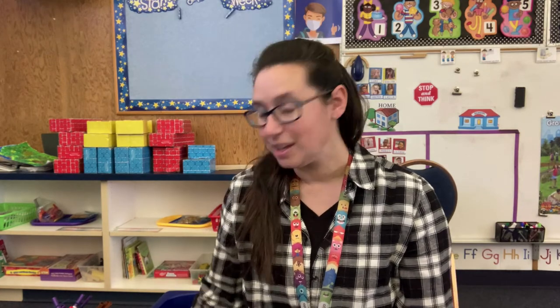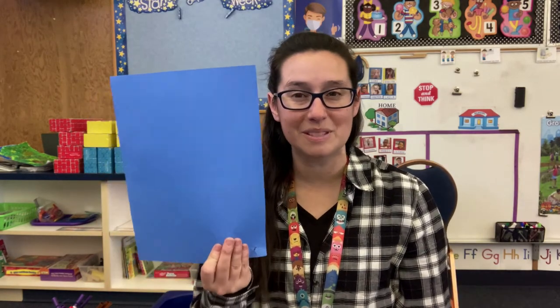What I need you to grab for this activity is an envelope that's filled with different kinds of band-aids. So grab all of those band-aids and a piece of paper. You should have a blue piece of paper that looks like this, but if you have another piece of paper you want to use, you can go ahead and grab that too.